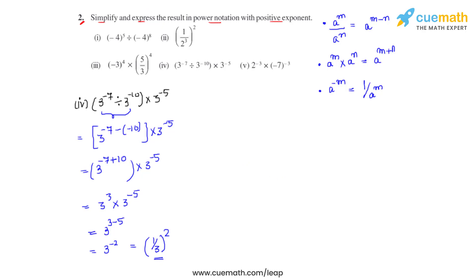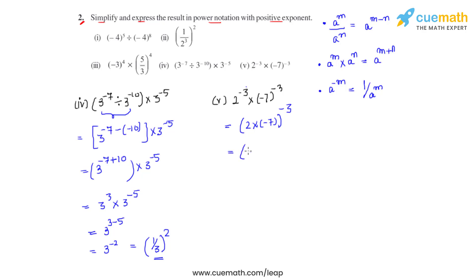The fifth bit is 2 raised to negative 3 times negative 7 raised to negative 3. The powers are the same, so we can directly multiply the bases: 2 times negative 7, whole raised to negative 3, which gives negative 14, whole raised to negative 3. Since the term inside the brackets is negative and the power is odd (negative 3), we write this as negative 1 over 14, whole raised to 3.